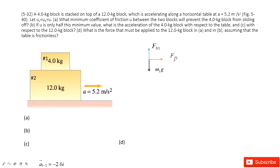We can write the equation for box one. On the y-component, the forces are balanced. On the x-component, we have friction equals mass times acceleration. This friction can be written as the coefficient mu times the normal force Fn. Therefore, we get that acceleration equals mu times g.